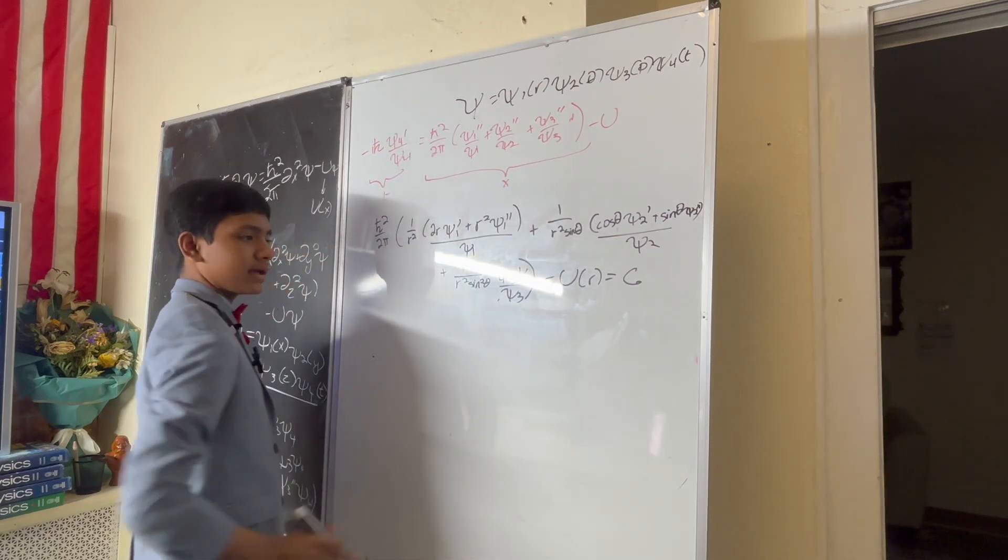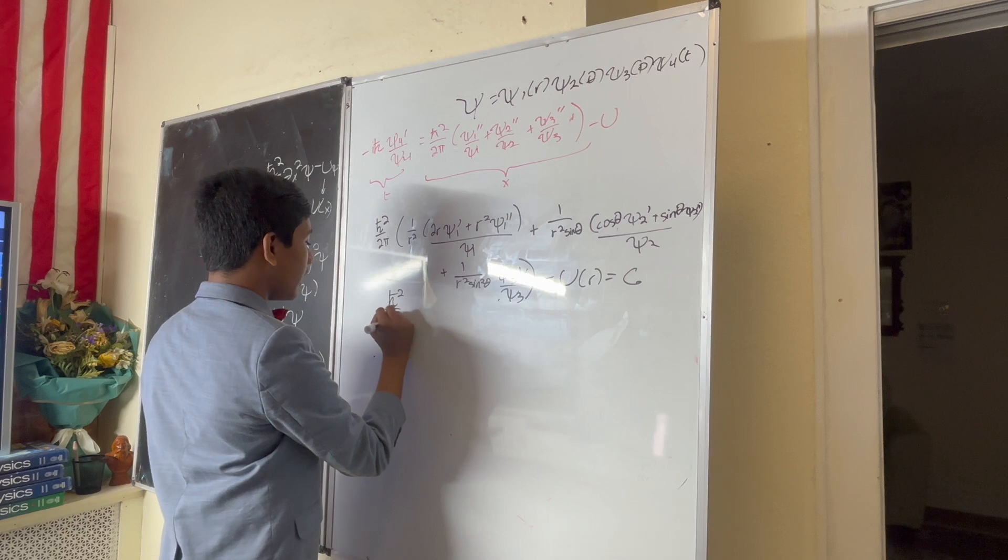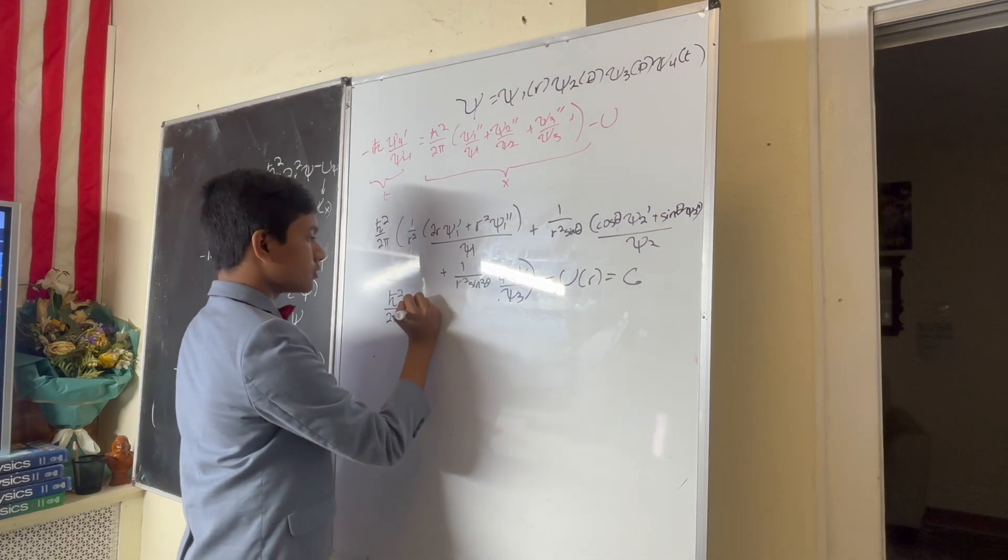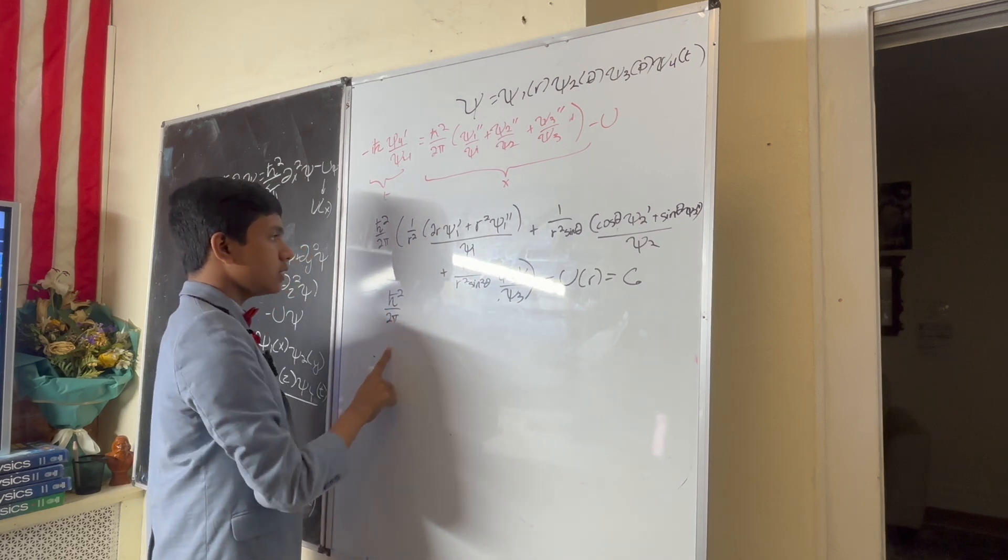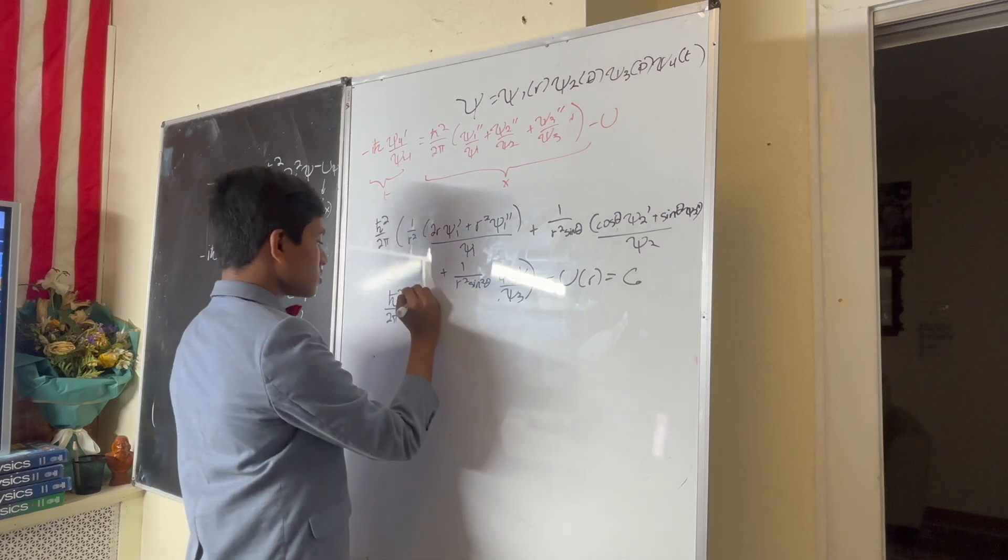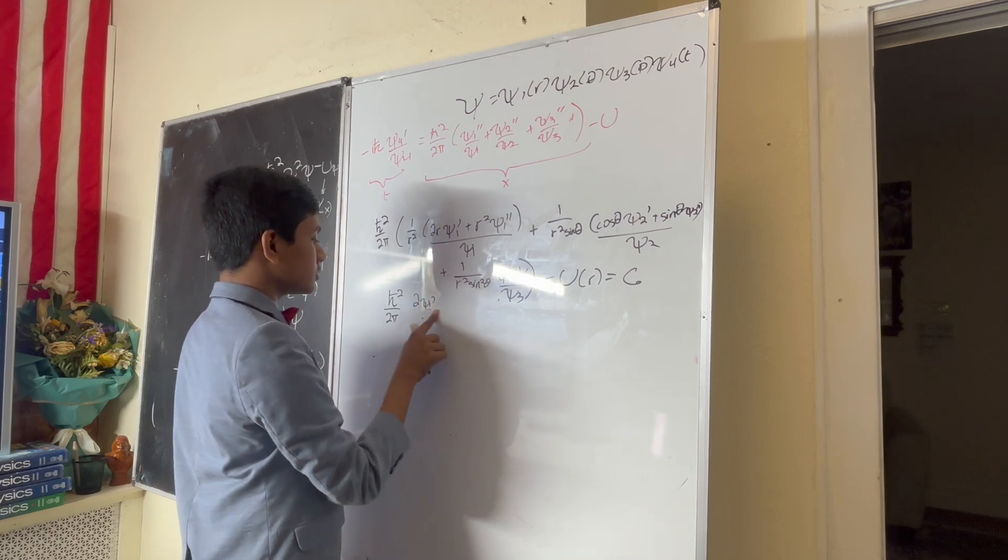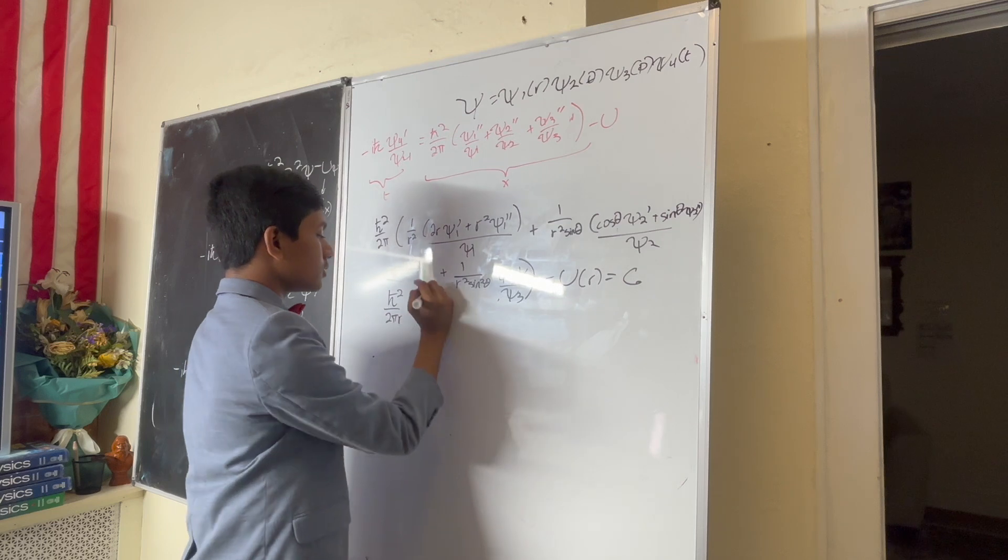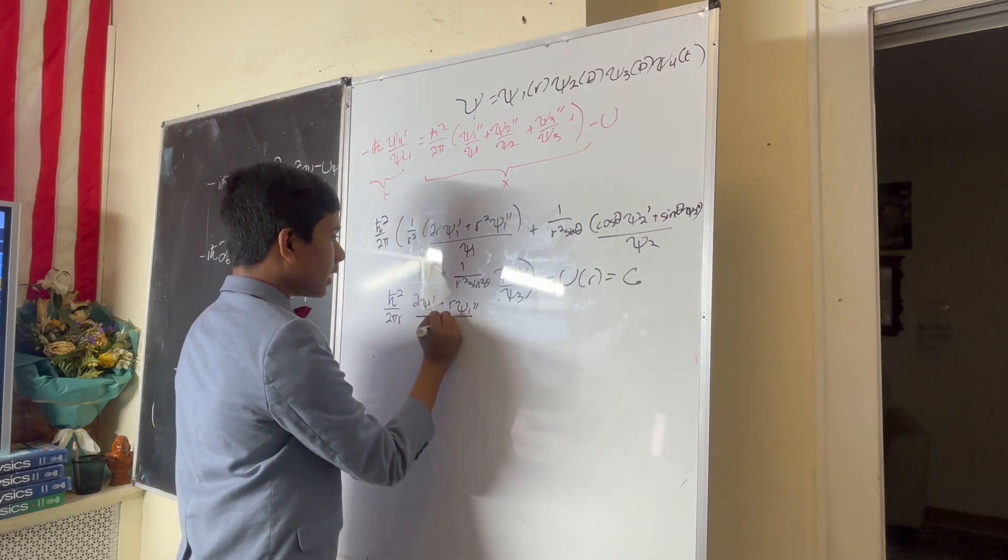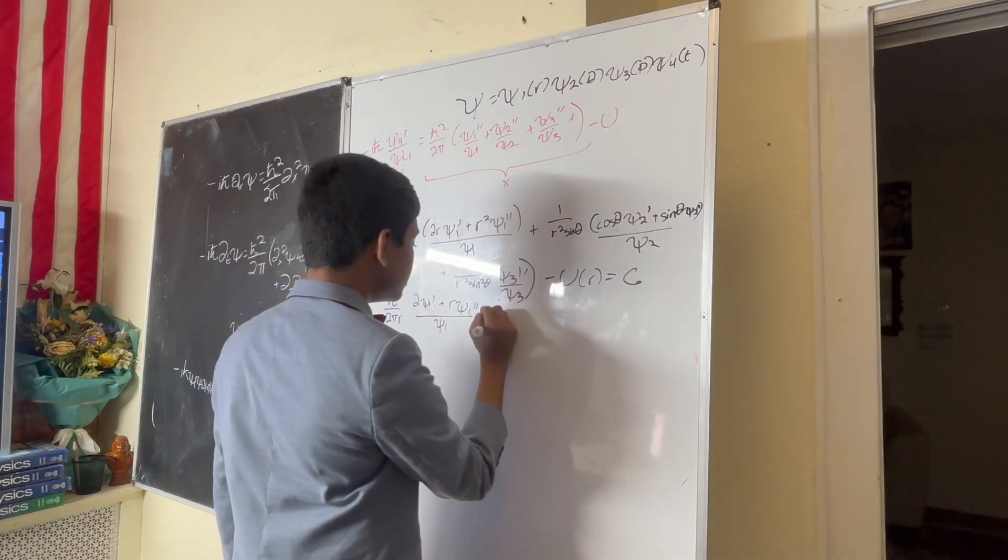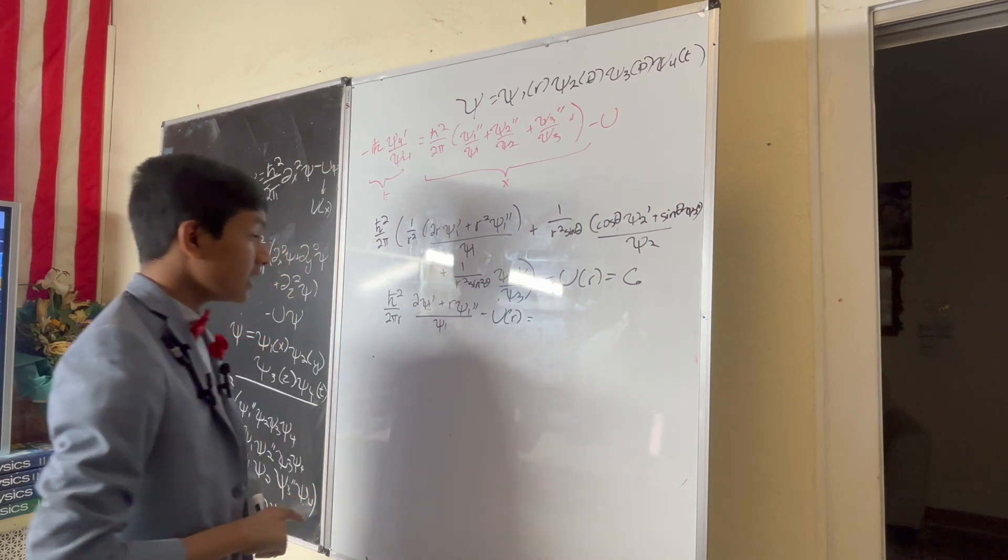We take this term, h-bar squared over 2m r squared, 2 psi 1 prime over r. No, let's do 2m r. 2 psi 1 prime plus r psi 1 double prime divided by psi 1 minus U over r is equal to, well, whatever is a function of everything else on the side. But, you might notice one inaccuracy. Everything here is actually a function of r as well, because of this.